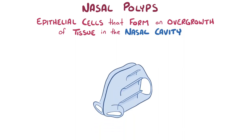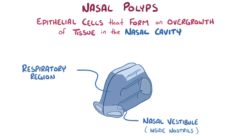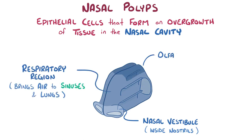The nasal cavity is made up of three regions. The first is the nasal vestibule, which is the area just inside the nostrils. Beyond that is the respiratory region, which delivers air to the sinuses and lungs. And above that is the olfactory region, which is involved in smelling.